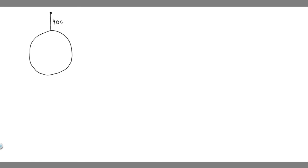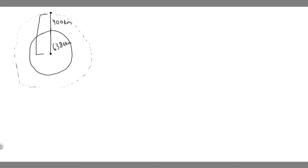Let's go ahead and draw what's going on here. Here's our earth and we have the space shuttle right here, and the distance from the space shuttle to the surface of the earth is 400 kilometers. It's going to be orbiting around the earth in a circle. The first thing we want to do is find the entire radius. The distance from the surface of the earth to the center is 6,380 kilometers — that's something you have to know. So adding them up, we get a total radius of 6,780 kilometers.